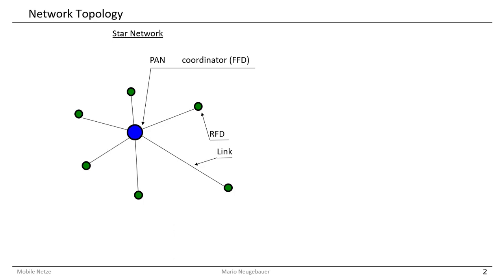Hello and welcome to this video about ZigBee 802.15.4. In this video I would like to talk about the packet structure and the message structures which are required to set up a star topology in an 802.15.4 network. We have different kinds of messages and I would like to explain these messages.